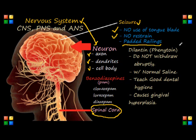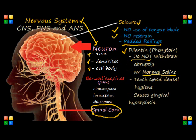Let's go over medications quickly. The most common medication — obviously we're using anticonvulsant drugs — but the most common one we need to be mindful about is Dilantin, or what we call phenytoin. With this medication, we do not withdraw suddenly, because if we do, a recurrent seizure can occur. Usually we administer this drug with normal saline, and we remind the patient to have good dental hygiene because the patient can be prone to gingival hyperplasia.